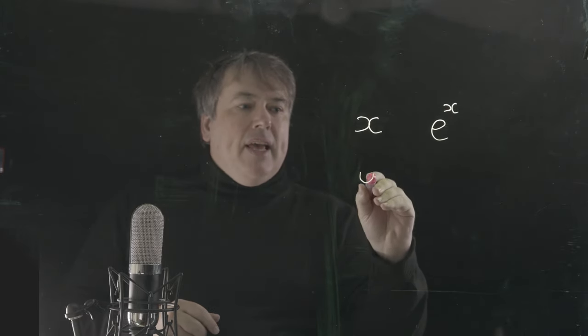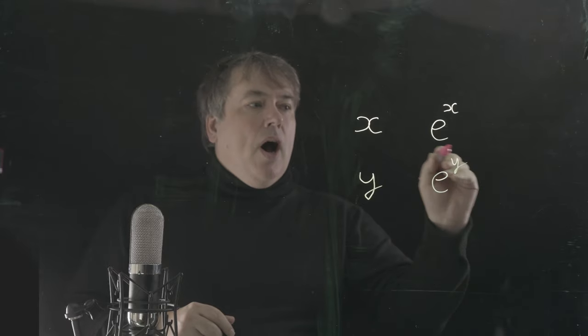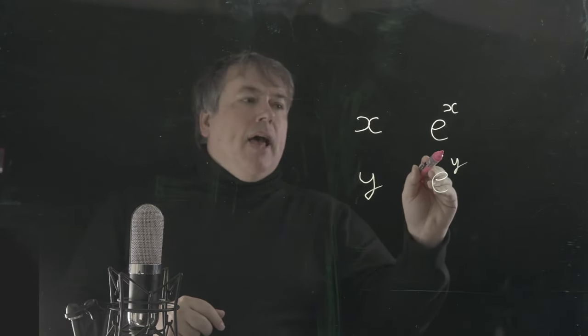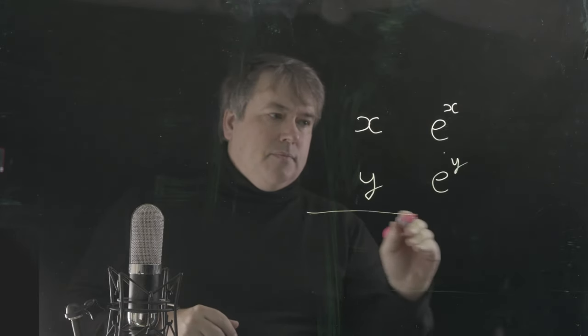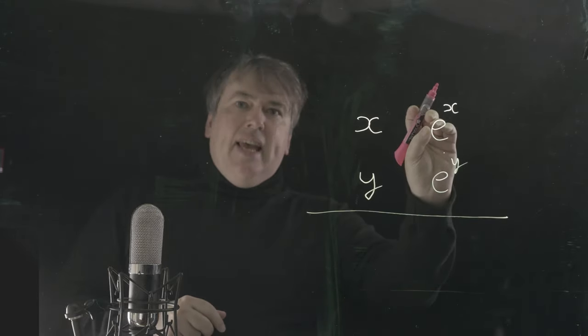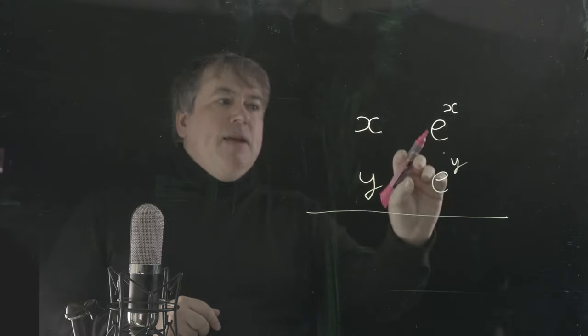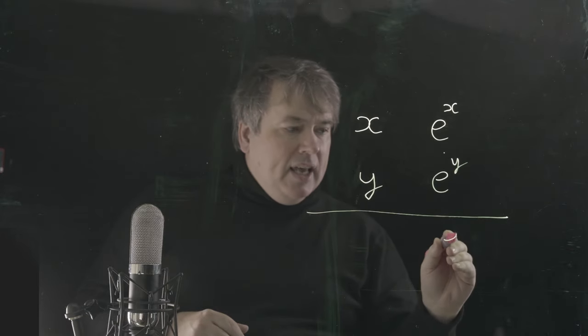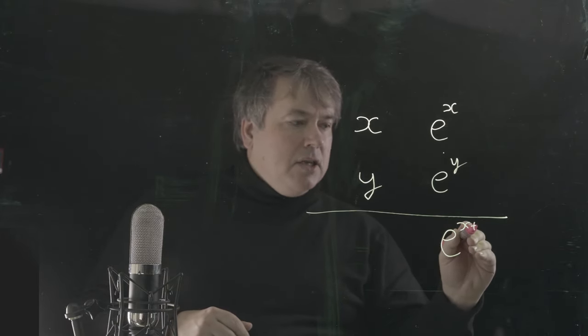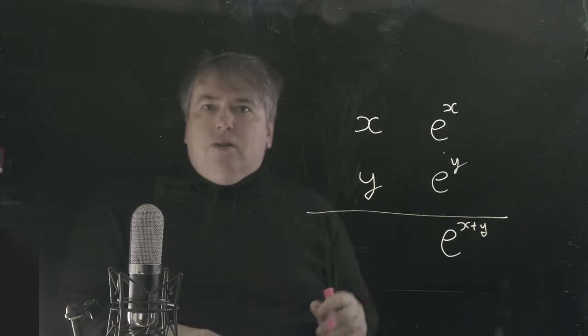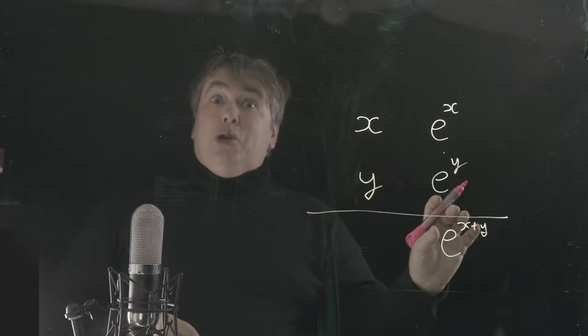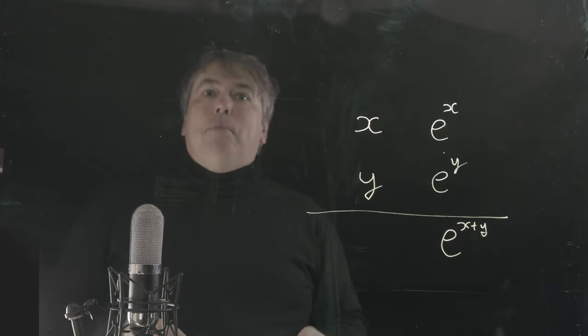Let's review our Diffie-Hellman system. If the private key is x, the public key is e to the x. If the private key is y, the public key is e to the y. So what do we get if we multiply e to the x times e to the y? It's e multiplied by itself x times, times e multiplied by itself y times, which is e to the power x plus y.